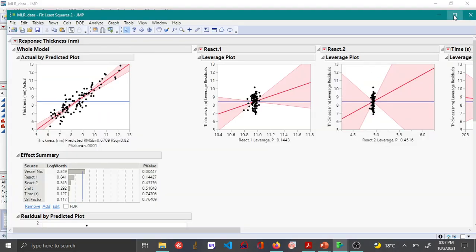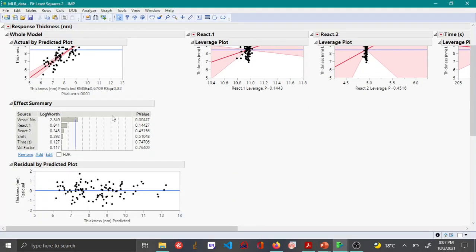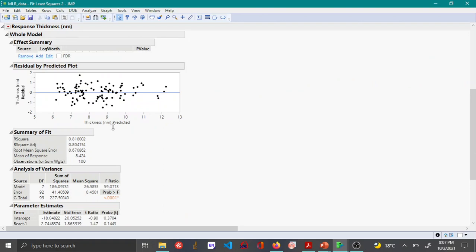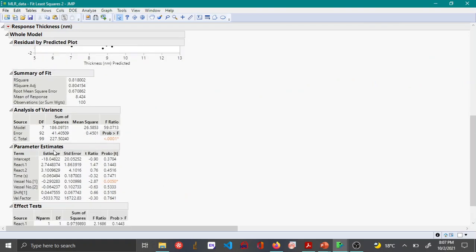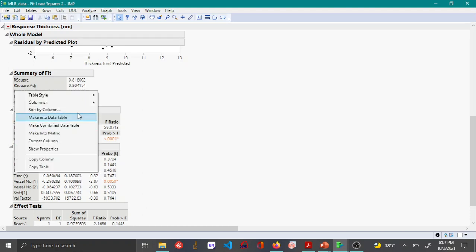You can see that JMP has done the fitting. Now let's come to the parameter estimates table. In order to take a look at the VIF values you right click on the table and then go to columns.